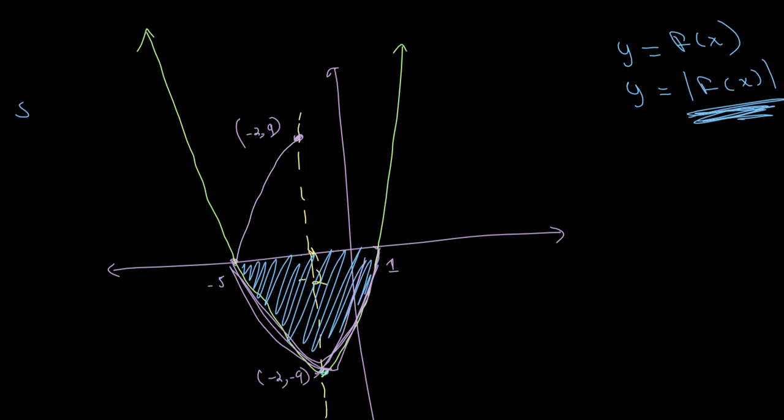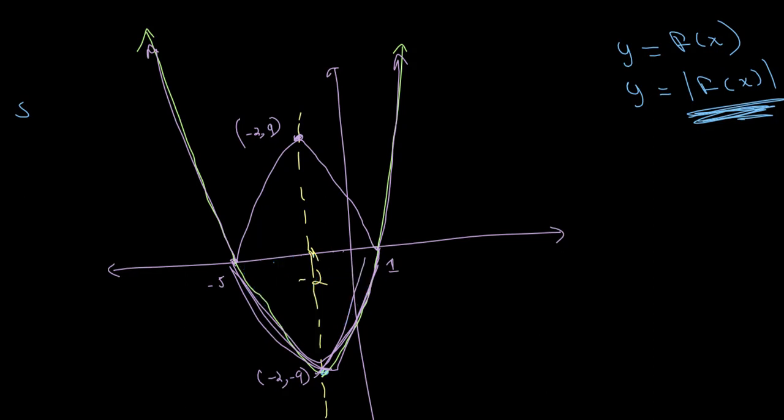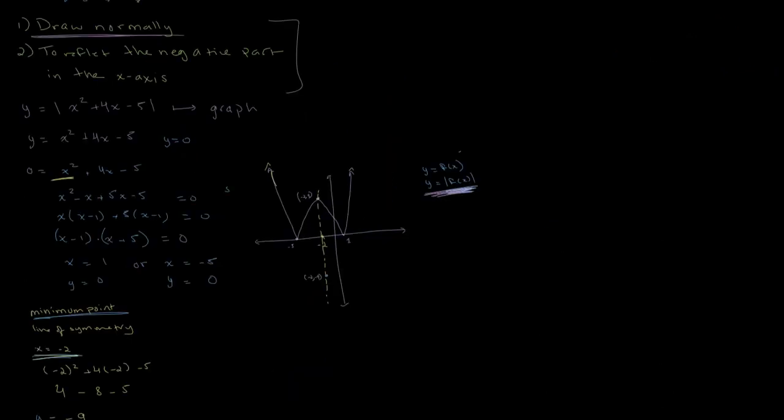And as such, we reflect the graph in the x-axis. So we can draw this over here. And this is giving us our new graph. It goes up on either side. I'll erase what we have previously, just for clarity. And this is our final graph, or the graph of y equals the absolute value of f of x. And I'll go over that one time in yellow to make it more clear.